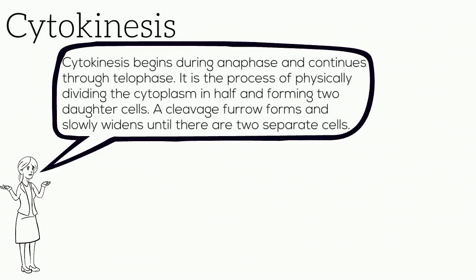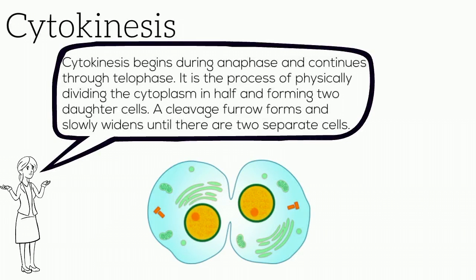Cytokinesis begins during anaphase and continues through telophase. It is the process of physically dividing the cytoplasm in half and forming two daughter cells. A cleavage furrow forms and slowly widens until there are two separate cells.